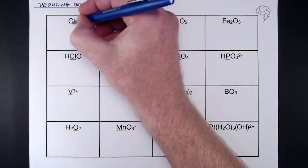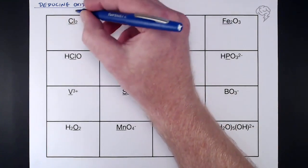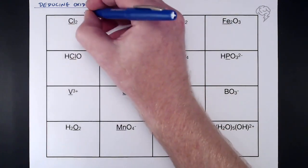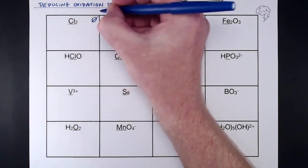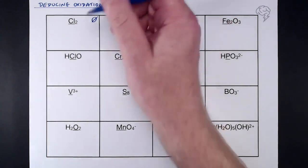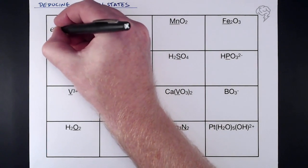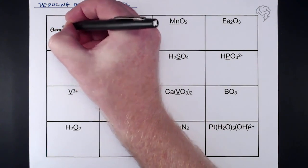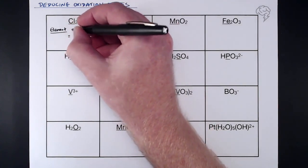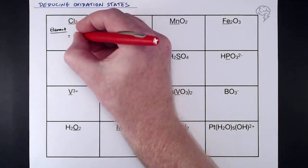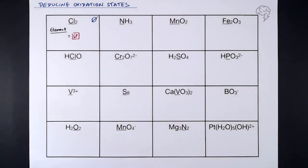First, we've got chlorine — Cl₂, the underlined one, is the oxidation state we're looking to find. The first thing I'd always do is decide on the overall oxidation state: there's no charge, so the overall oxidation state here is zero. Cl₂ is just an element, and the rule is that if it's just an element, the oxidation state equals zero. So the answer is zero — because it's just an element.